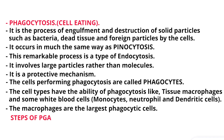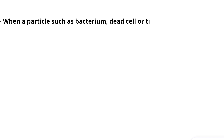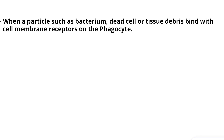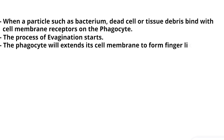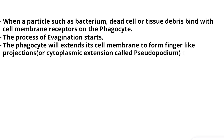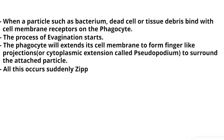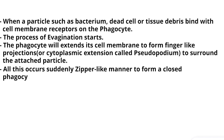Steps of Phagocytosis: When a particle such as a bacterium, dead cell, or tissue debris binds with cell membrane receptors on the phagocyte, the process of evagination starts. The phagocyte extends its cell membrane to form finger-like projections or cytoplasmic extensions called pseudopodia to surround the attached particle. All this occurs suddenly in a zipper-like manner, to form a closed phagocytic vesicle.